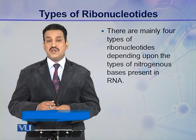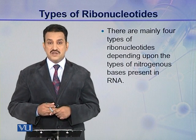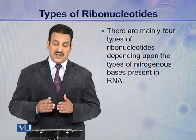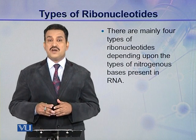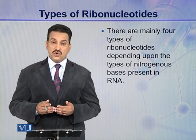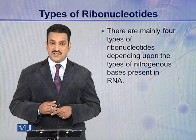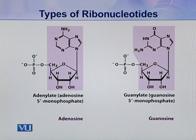As you know, there are four types of nitrogenous bases present in a ribonucleotide. One nitrogenous base is present in one ribonucleotide, but overall there are four types of ribonucleotides. So there are four types of nucleotides present in a ribonucleic acid, and these four types depend on the type of nitrogenous base.